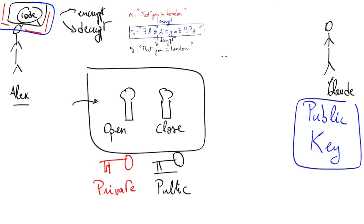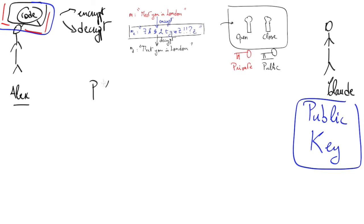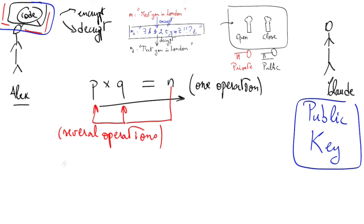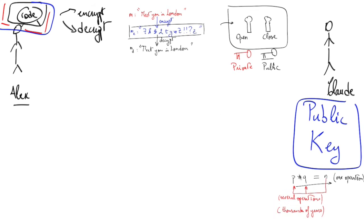Everyone should note the following mathematical fact: if you have two numbers P and Q, calculating their product costs only one operation — very fast for a computer. But given N, and wanting to find the two prime numbers P and Q whose product gives N, this takes far more operations. For actual public keys, this can take thousands of years even using the most powerful computers.